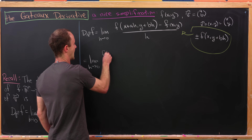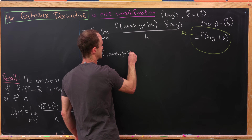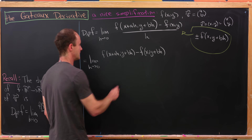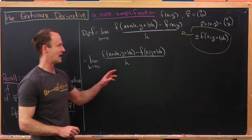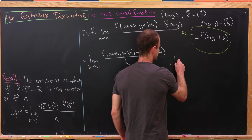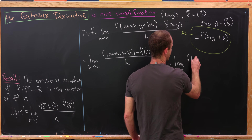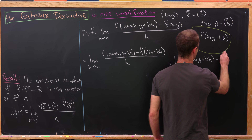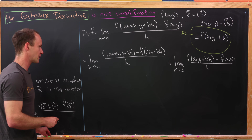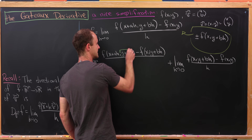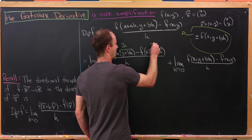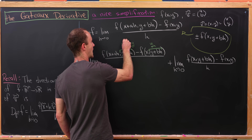We split this into two limits. The first part is the limit of [f(x + ah, y + bh) − f(x, y + bh)] / h, and the second is plus the limit as h goes to zero of [f(x, y + bh) − f(x, y)] / h. An important thing to notice is that the y + bh term appears in both parts — I'll call it y_h — and crucially, y_h approaches y as h approaches zero.